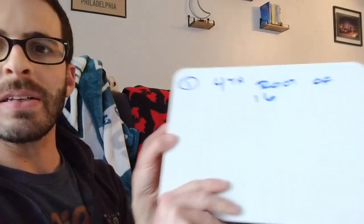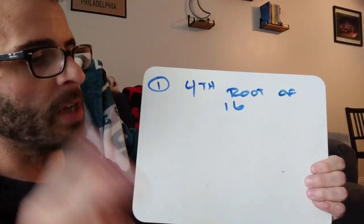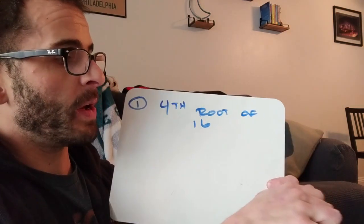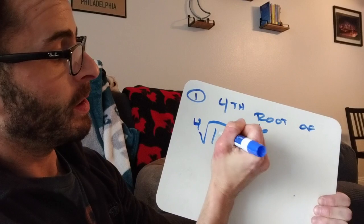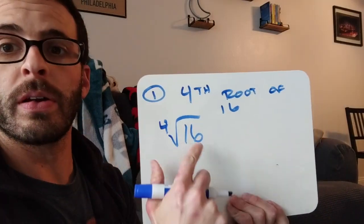All right, so for number 1, the directions are kind of weird, but basically it's saying find the 4th root of 16. So first, I want you to write it down two different ways for practice. First way I want you to write it down is something that you've probably seen before. What is the 4th root of 16?